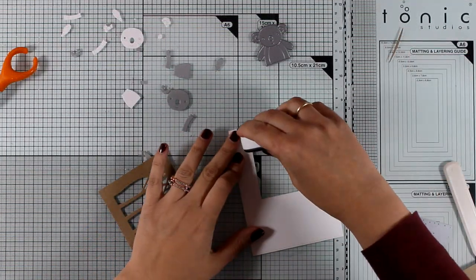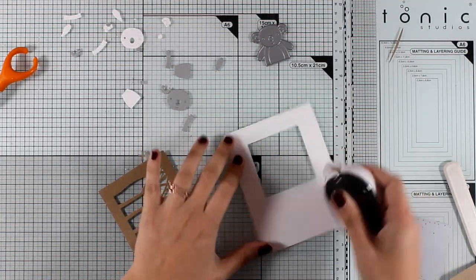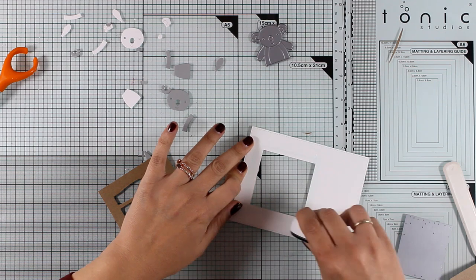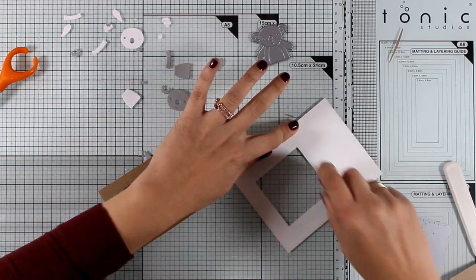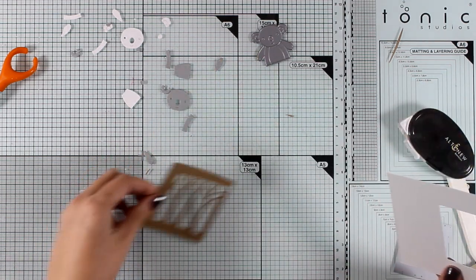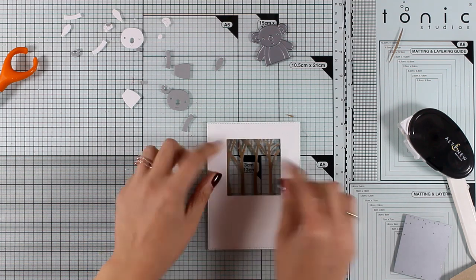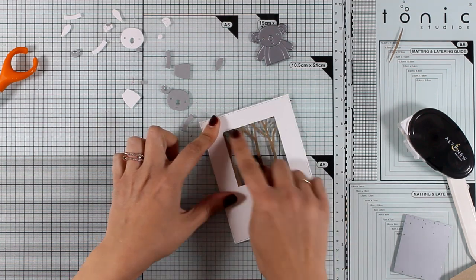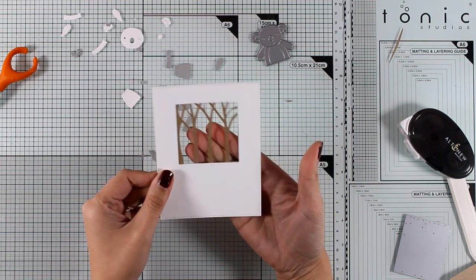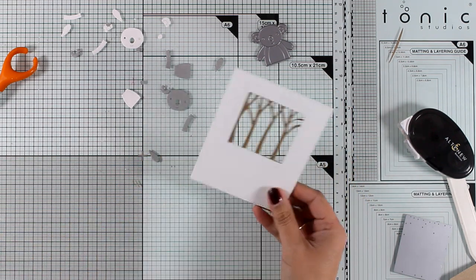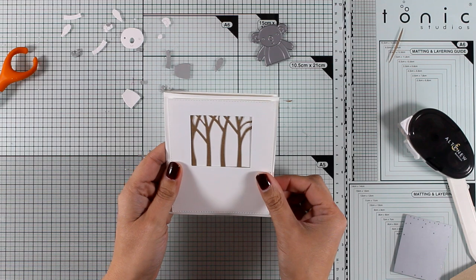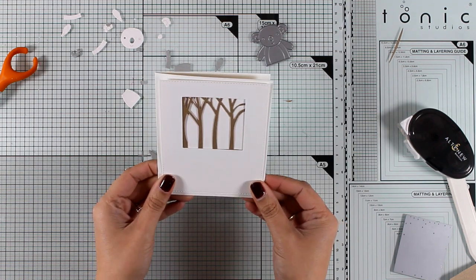But since I need this to be at the back of my panel, I'm just going to cut it out with my scissors and stick it at the back. For this card, I'm going for a clean and simple look, so all I'm going to do is to stick those trees at the back to create some interest on the background of my koala. And you can definitely cut them out of white cardstock and then use your alcohol markers to add some shading.